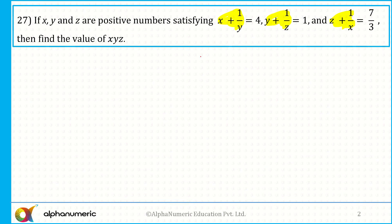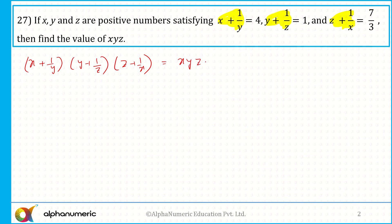Now what is that result? That is very very important. Always know that the value of (x + 1/y) into (y + 1/z) into (z + 1/x), if you open the bracket, it will simply be equal to xyz plus x plus y plus z plus 1/x plus 1/y plus 1/z plus 1/(xyz). If you know this result you can get the answers quickly.